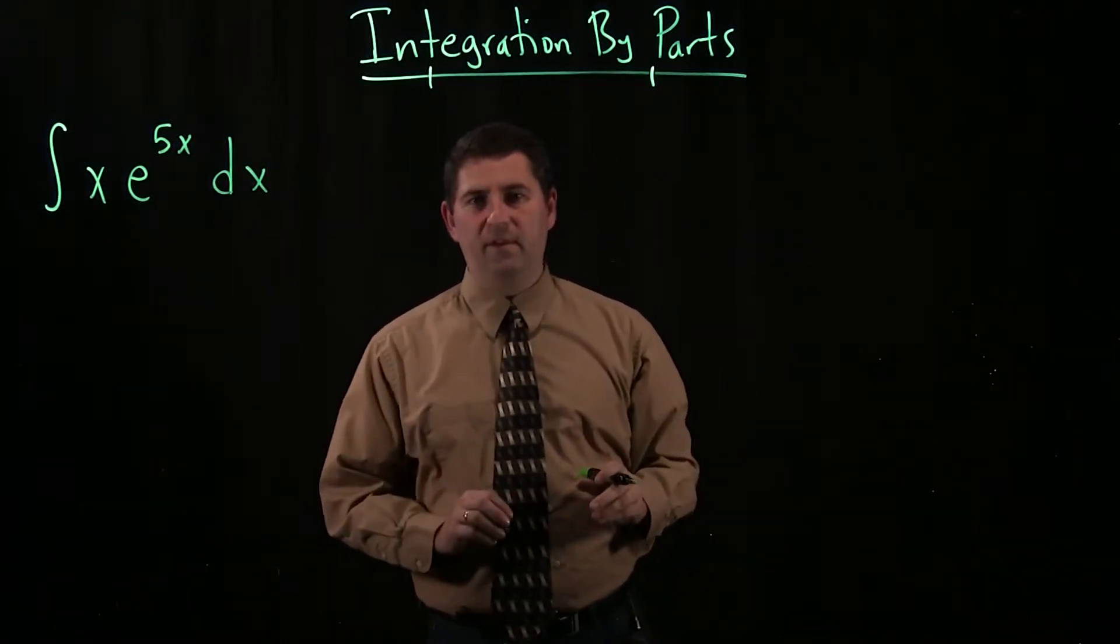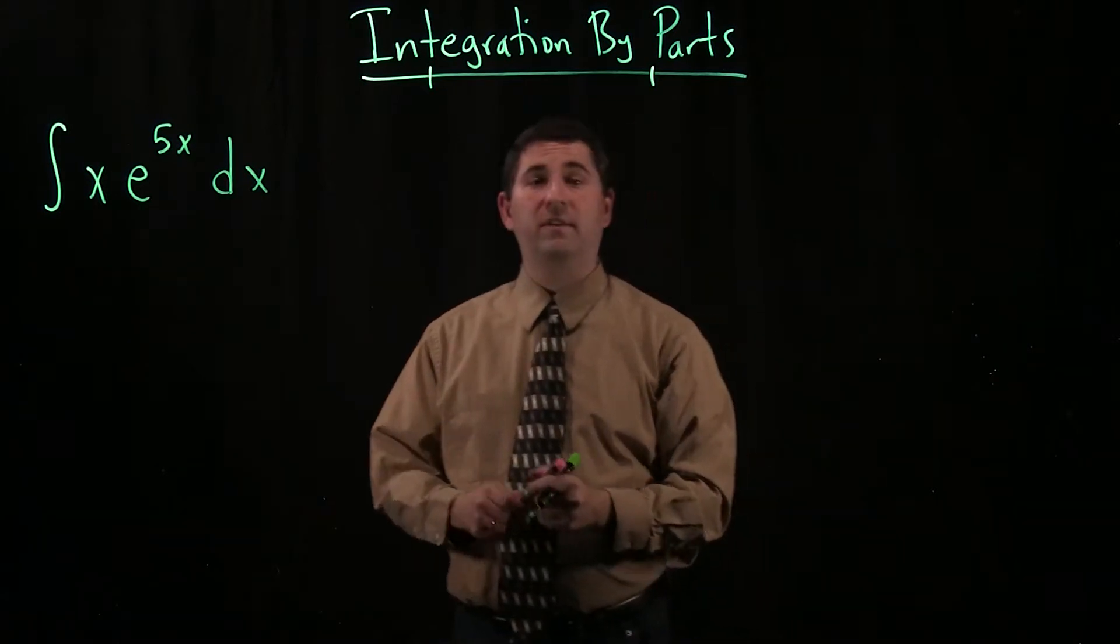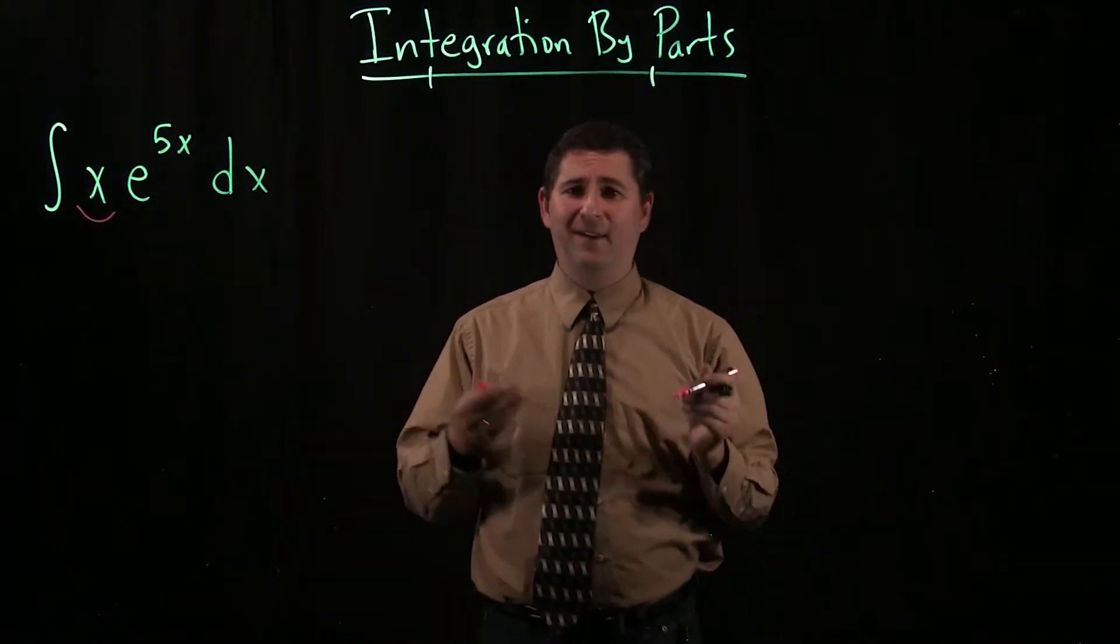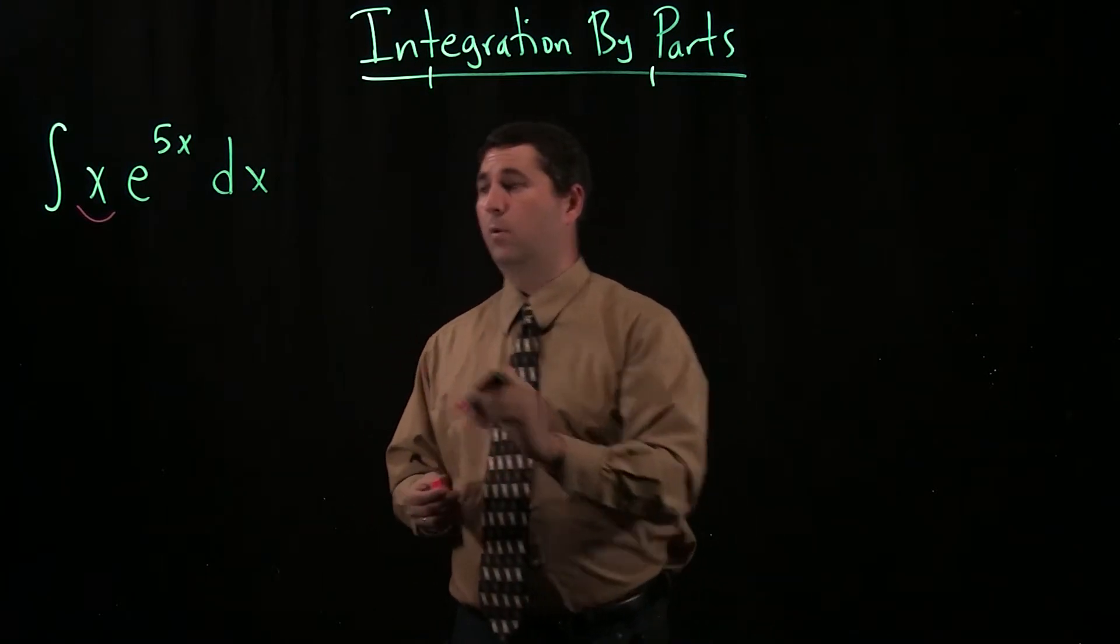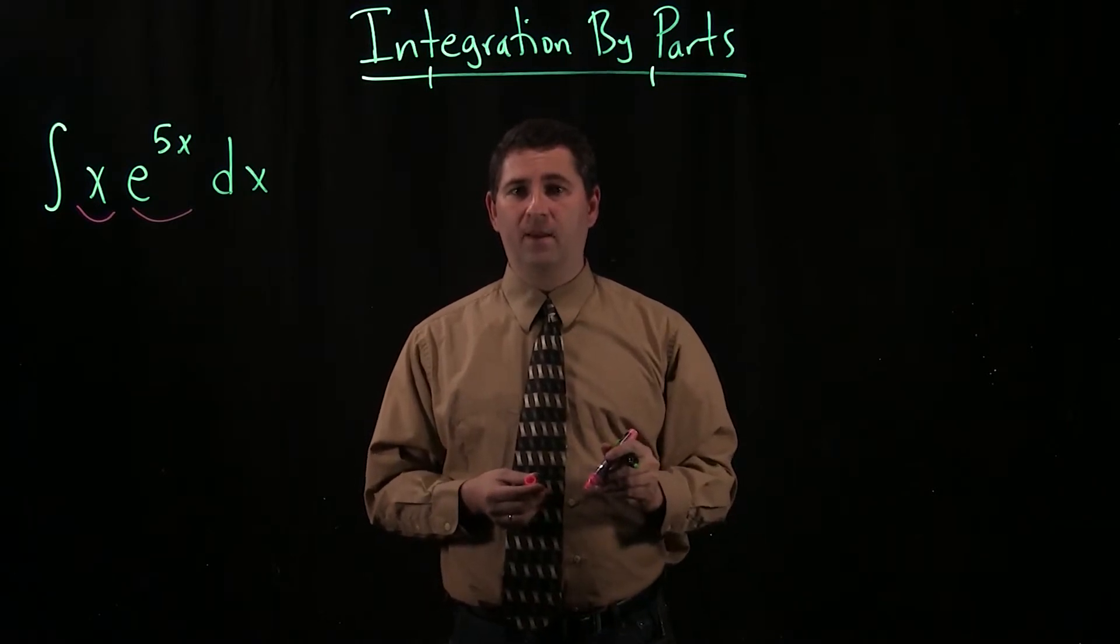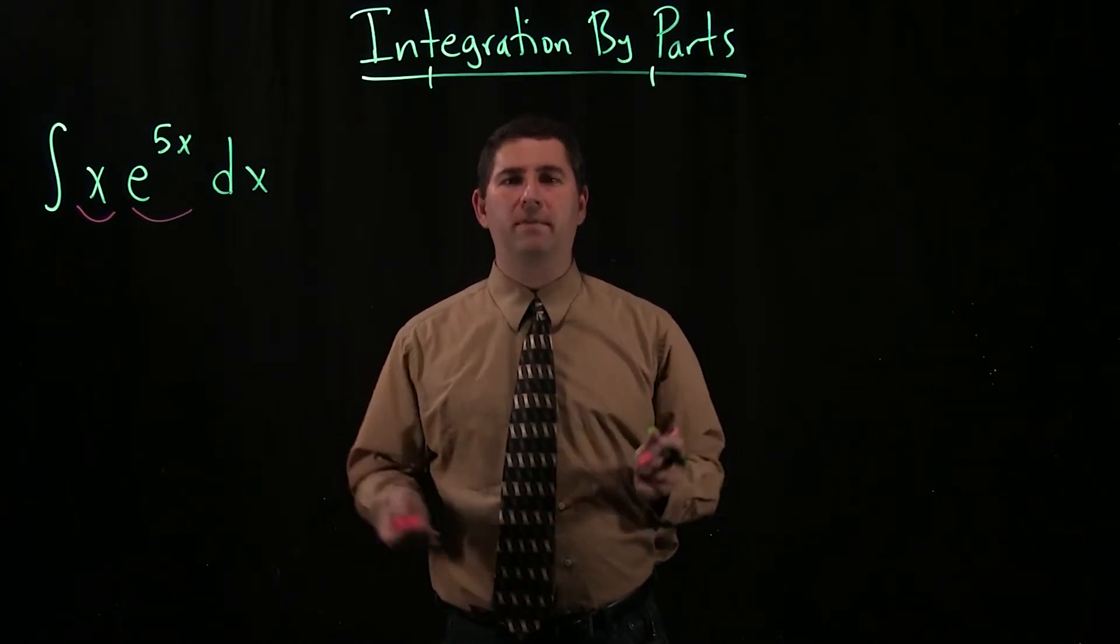Now a very common mistake that students make is to take a look at this integrand and say, hey look, there's an x. I know an antiderivative for that. It's 1 half x squared. And look at that over there, e to the 5x. Antiderivative is 1 fifth, e to the 5x. So I'll just take those two answers and multiply them together.